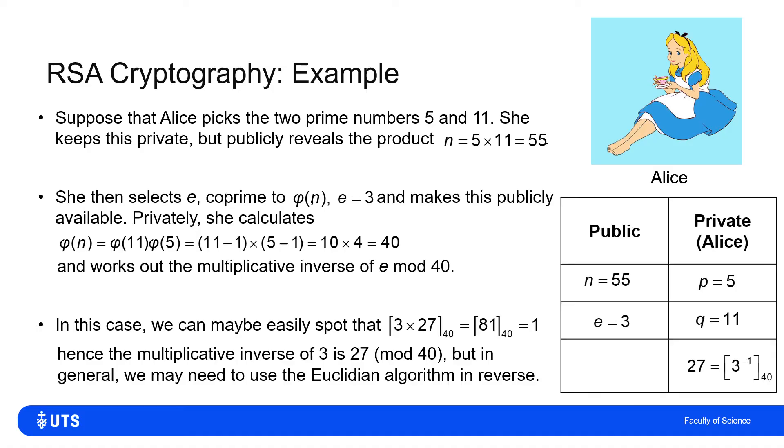So if we think of our publicly available table, anybody can know that n is 55, anybody can know that E is 3, but only Alice knows that p is 5, q is 11, and only Alice knows that the multiplicative inverse of the value she's made publicly available equals 3 is 27 mod 40. Nobody else even knows we're talking about mod 40, because they don't know the prime factorization of n.